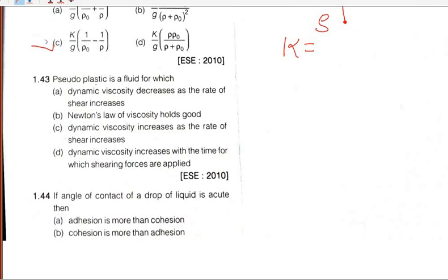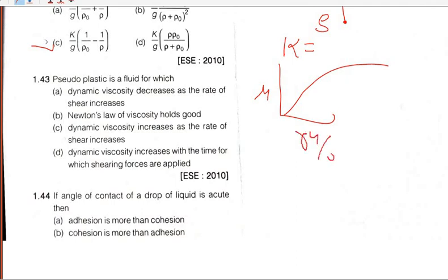Question 43: Pseudoplastic is a fluid for which dynamic viscosity decreases as the rate of shear increases. This is correct. Newton's law does not hold good for pseudoplastic fluids, so A is also a valid characteristic.